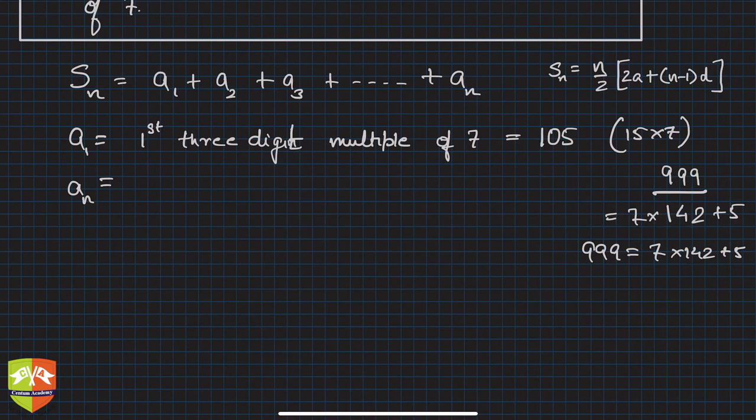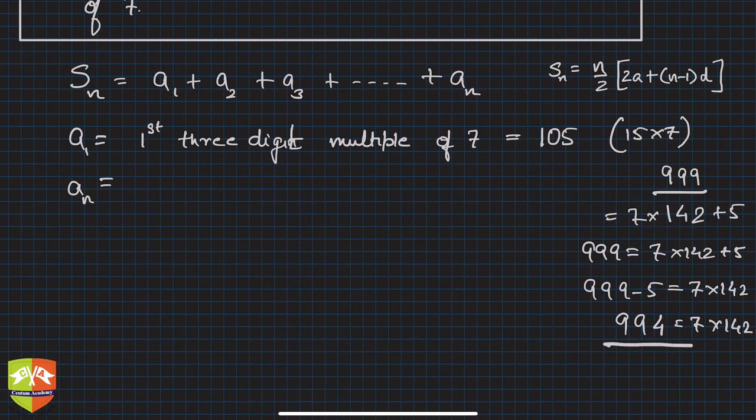So if you see, 999 minus 5 is 7 times 142, which is 994. So 994 appears to be the last three digit multiple of 7. Because after this, the next multiple of 7 is 1001. This is a 4 digit number. So hence we can clearly say that the highest is 994, so an is 994.